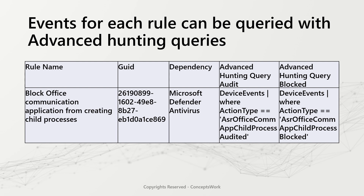Make sure you use these two tables: DeviceEvents, where the ActionType is either 'ASR Office Communication App Child Process Audited' or 'ASR Office Communication App Child Process Blocked', to view relevant alerts and events.